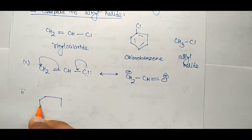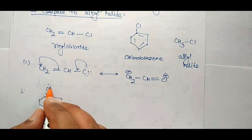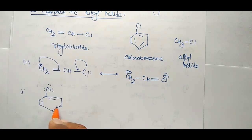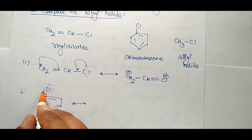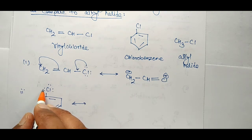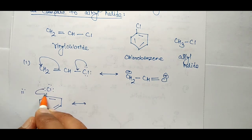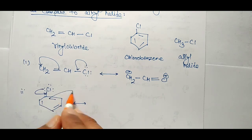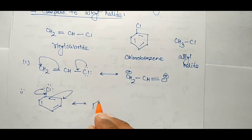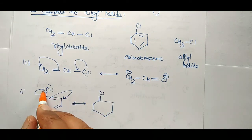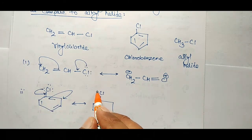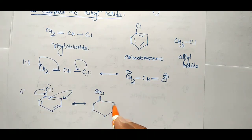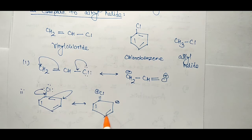Now in the case of aryl halide — if we talk about chlorobenzene — we see that chlorine is present and has a lone pair. It will also show the +M effect, so this lone pair takes part in delocalization. The pi bond shifts, and now in this case the carbon-chlorine bond has double bond character, as chlorine has donated its lone pair, and therefore chlorine carries a positive charge while this carbon carries a negative charge.